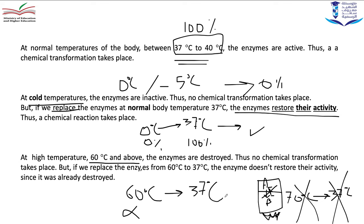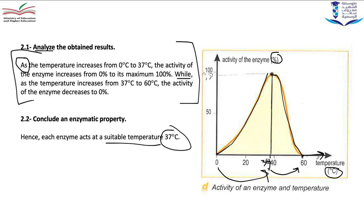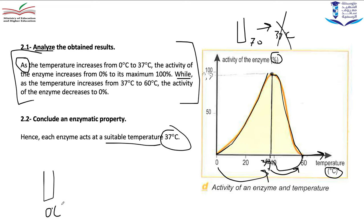At 60 degrees Celsius and above, enzymes are destroyed. If I went back to 37 degrees Celsius, the enzyme was already destroyed and no digestion will occur. In contrast, at zero degrees Celsius with the enzyme and substrate, if I place the tube at 37 degrees Celsius, I will have digestion — because at cold temperature it was inactive, not destroyed.